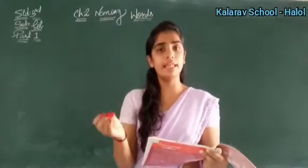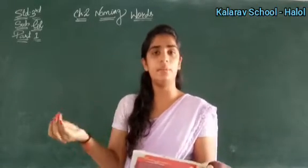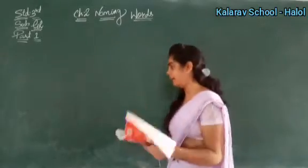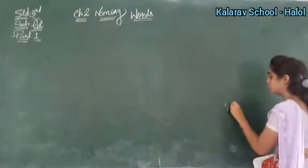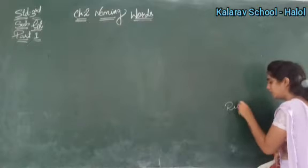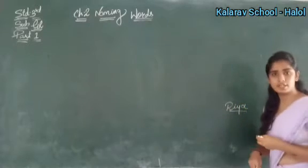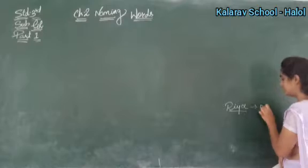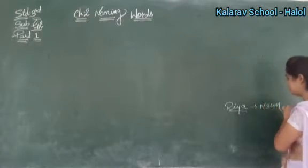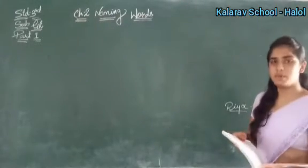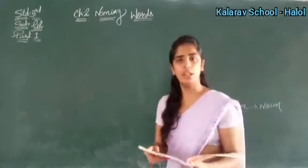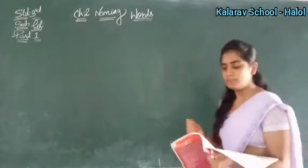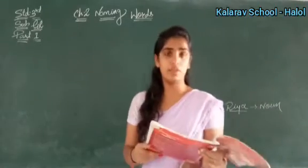Understand: when the name of any person, place, animal or a thing is given in the sentence, that is known as a noun. Now see what is next given to you.